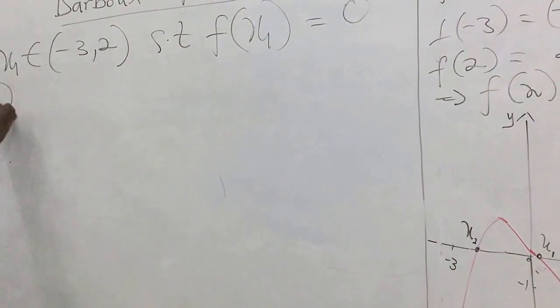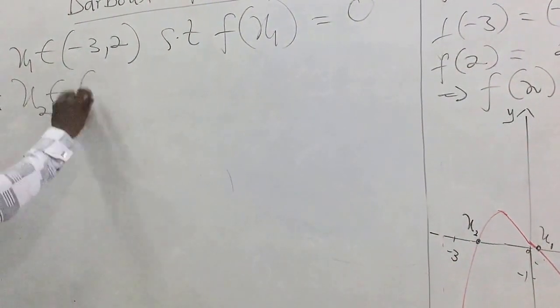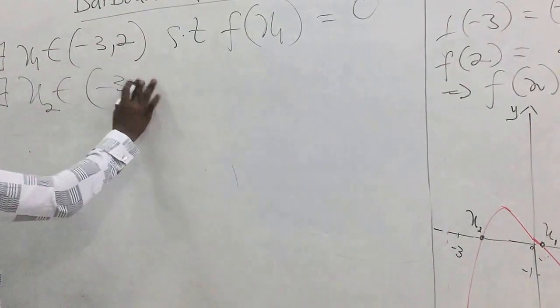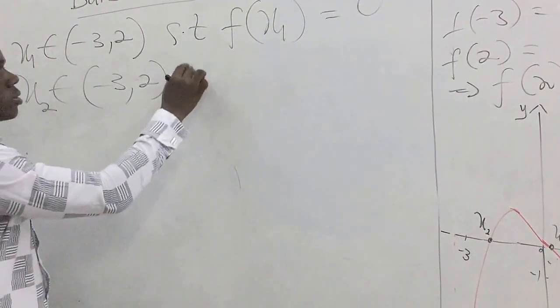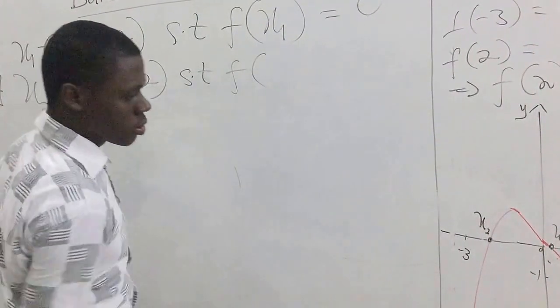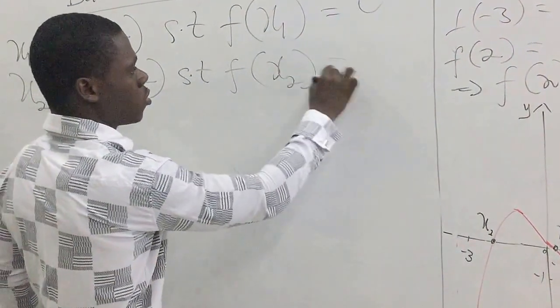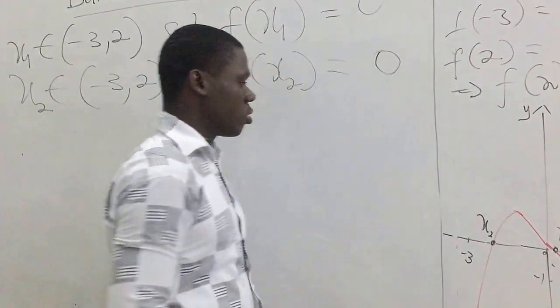Also, there exists x₂ within the interval (-3, 2) such that f(x₂) = 0.